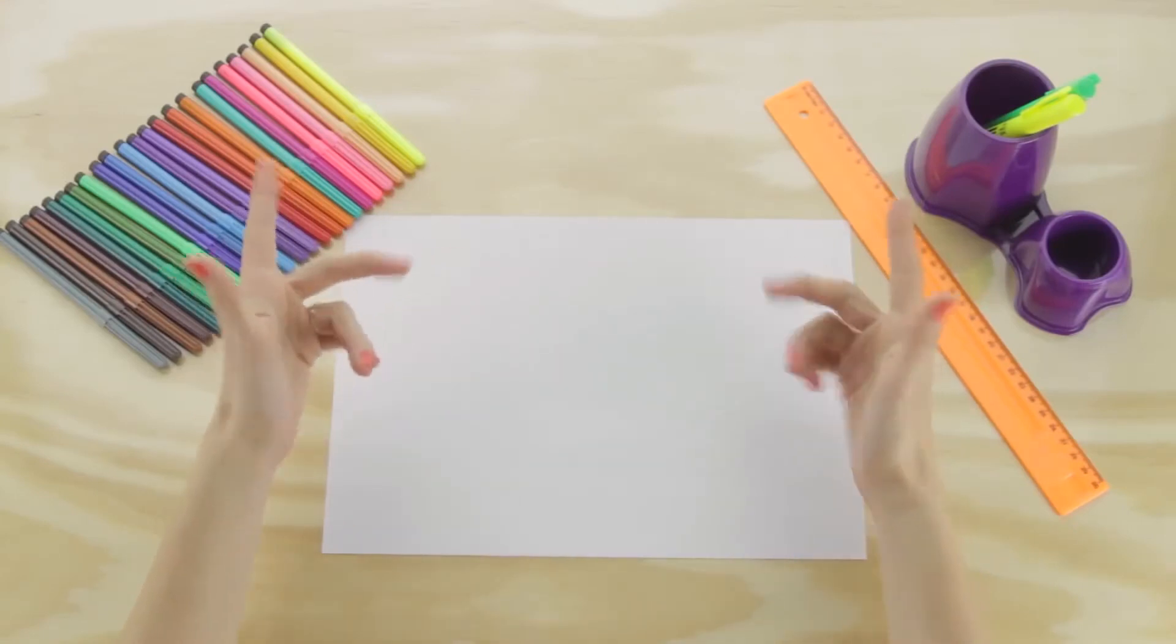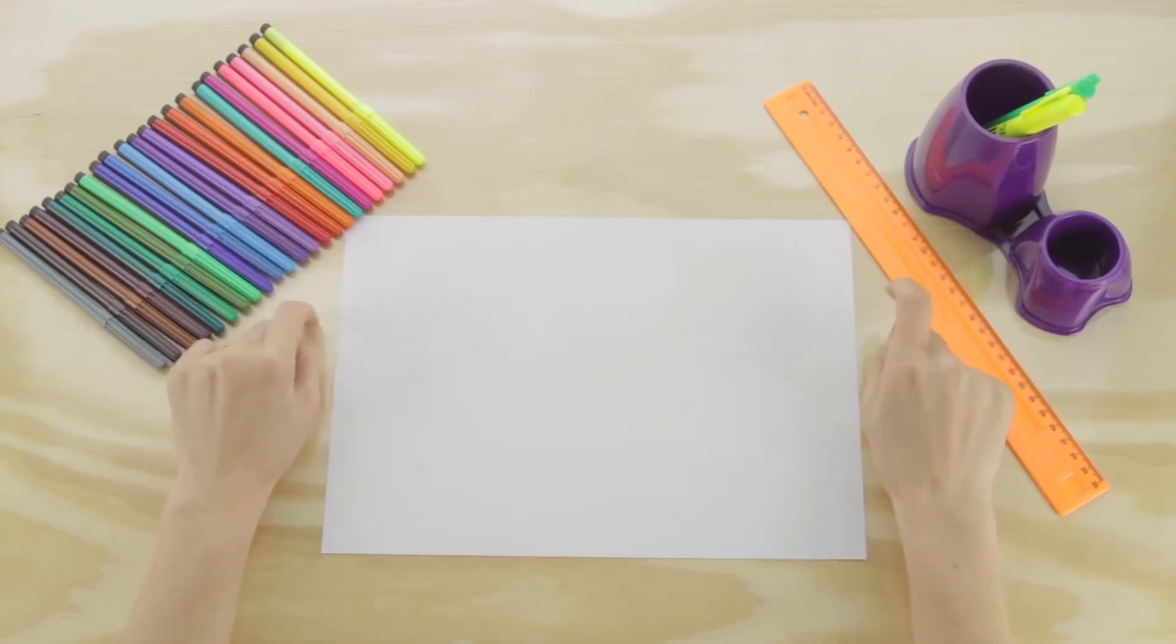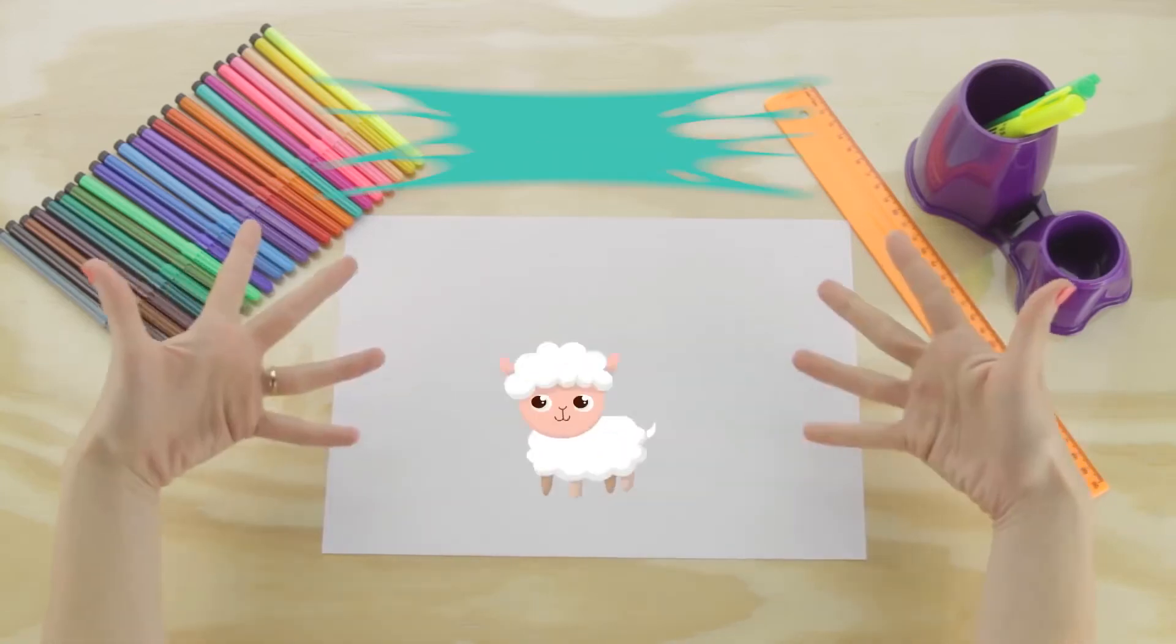What animal is very white, looks like a cloud and makes a sound like this? It's very easy! Do you know what it is? That's right! It's a sheep!